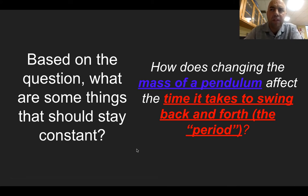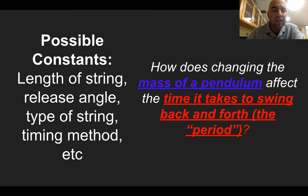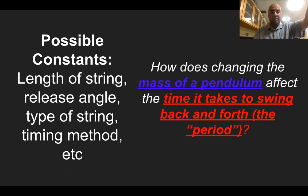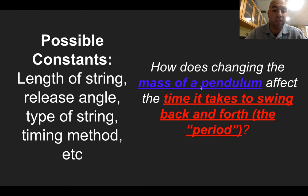We also need to think about what needs to stay constant. We want to make sure we know it's only a change in mass that affects the period, with nothing else clouding it. Possible constants include the length of the string — keep it the same the whole time — the release angle, the type of string, and how we time it. We want the only thing actively changing to be the mass of the pendulum.